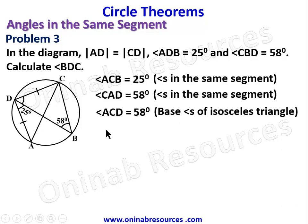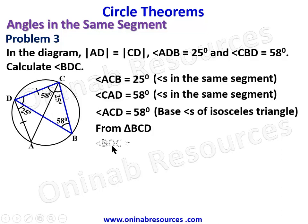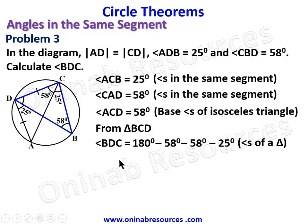From this triangle, we have angle BDC. We just calculated one angle to be 58 degrees and another to be 25 degrees. Adding them together with BDC gives 180 degrees — angles of a triangle. Therefore angle BDC is 180 degrees minus 58 degrees minus 58 degrees minus 25 degrees, giving angle BDC equal to 39 degrees. We have done justice to problem three.